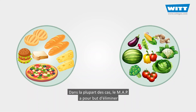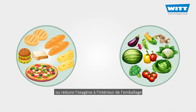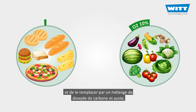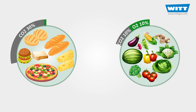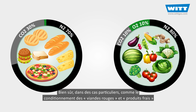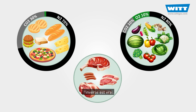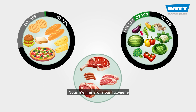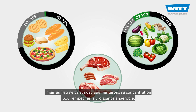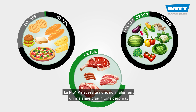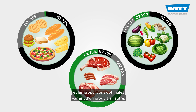In most cases, MAP is aimed at eliminating or reducing oxygen inside the packaging and replacing it with a mixture of carbon dioxide and nitrogen. Of course, in special cases such as packing red meat and fresh produce, the opposite is correct — we do not eliminate the oxygen but instead increase its concentration to prevent anaerobic growth. MAP therefore normally requires a mixture of at least two gases, and the optimum proportions vary from product to product.